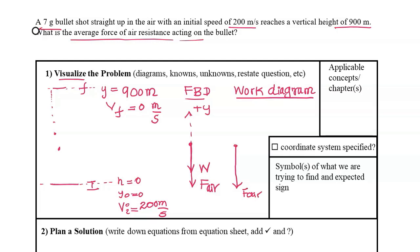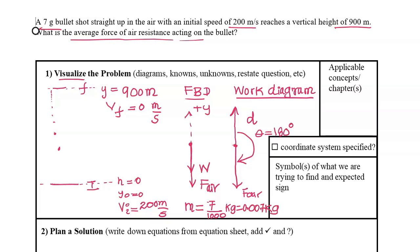In the work diagram, we talk about two conservative forces: weight and the spring force. All other forces are non-conservative. Here, the force of air resistance is directly downwards, while the displacement vector is directly upwards, so the angle between the air resistance and the displacement vector is 180 degrees. The mass of the bullet is 7 grams, which I'll convert to kilograms: 0.007 kilograms. Now let's identify the knowns and unknowns.